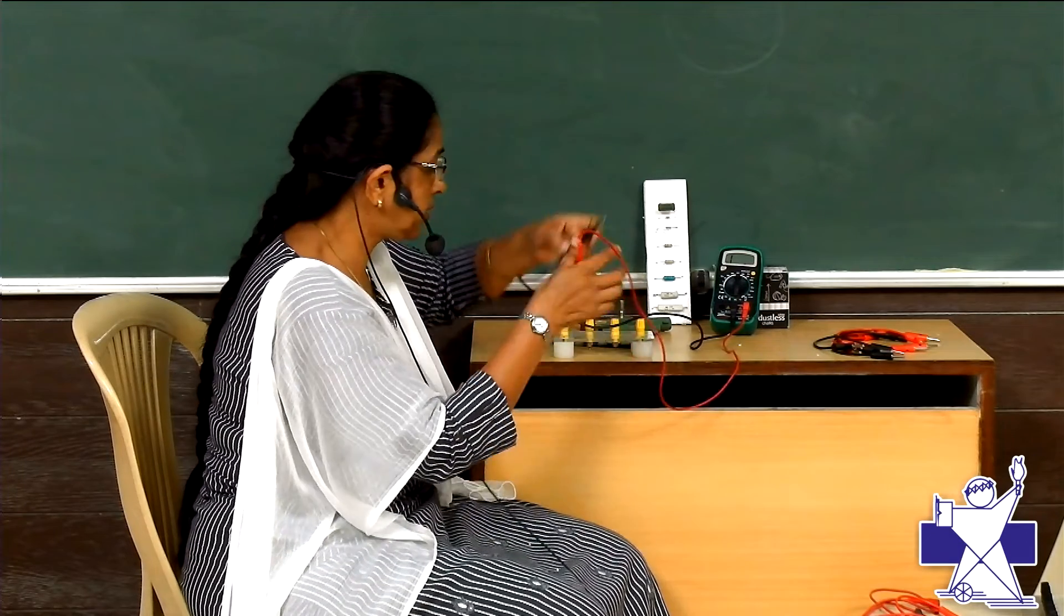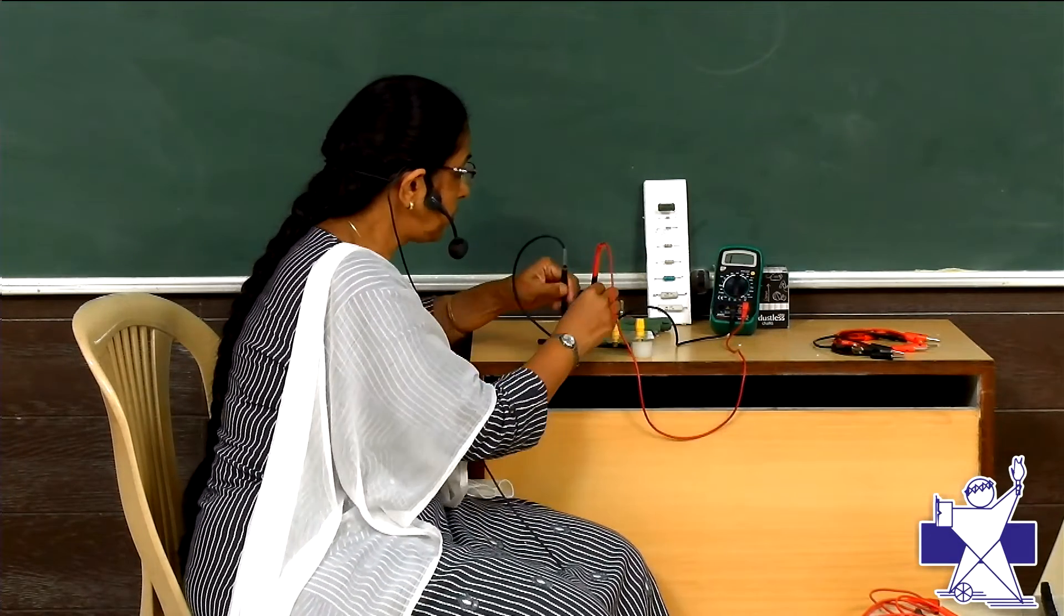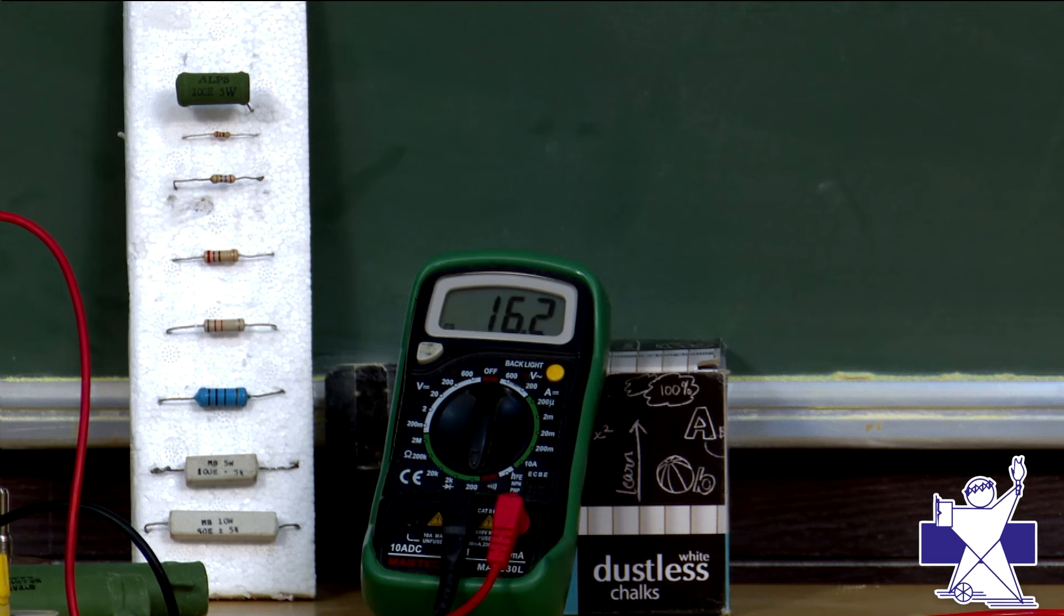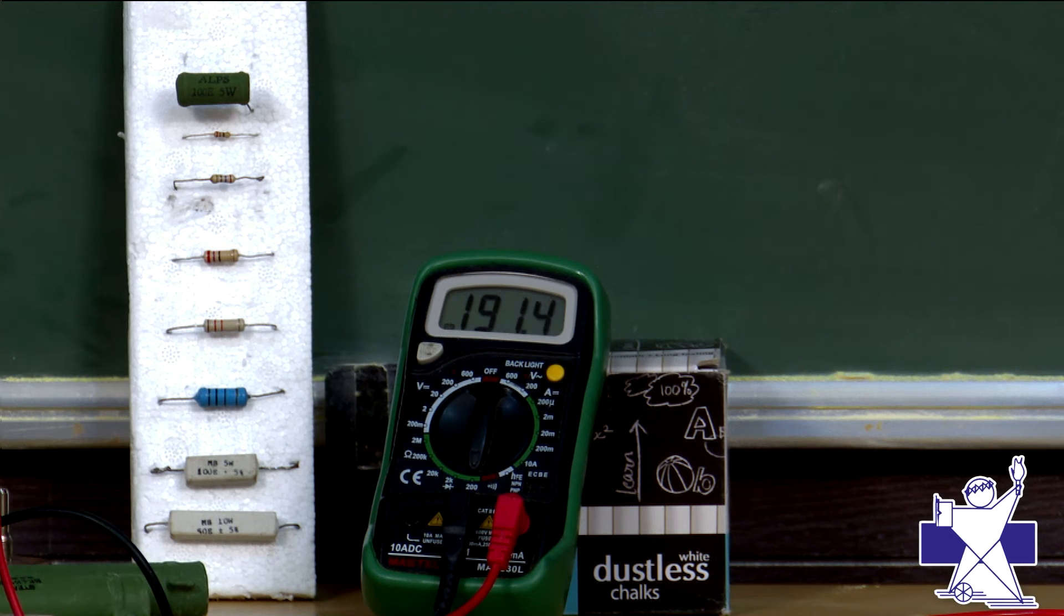Connecting here first, between these two, and you can see, you are getting 100 ohms. Now, since they are connected already in series, just I am changing that, and you can see, here it is around 200 ohms.